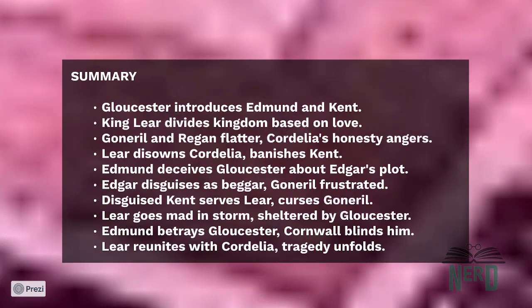Act 1: King Lear begins as the Earl of Gloucester introduces his illegitimate son Edmund to the Earl of Kent. Lear, King of Britain, enters with his court. Now that he is an older man, Lear has decided to divide his kingdom between his three daughters. The division will depend on the quality of each princess's declaration of love for her father before the court.